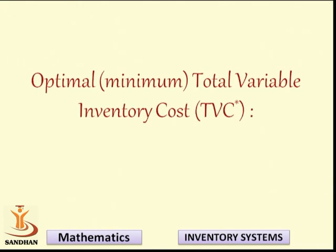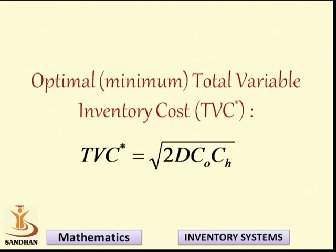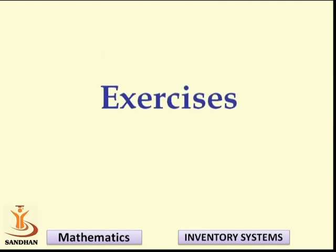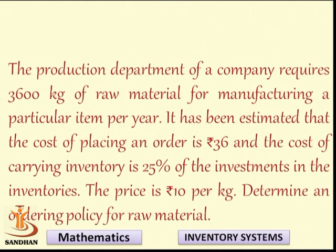The optimal minimum total variable inventory cost TVC star is given by the square root of (2 × D × Co × Ch). The total optimal inventory cost TC equals TVC star plus D × C, where C is the cost per unit and D is annual demand — adding the purchase cost to the variable inventory cost.